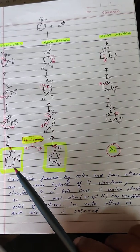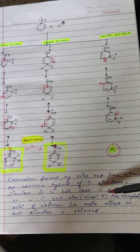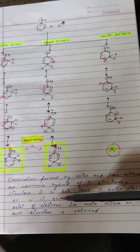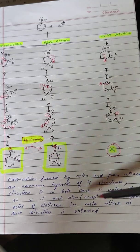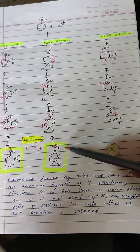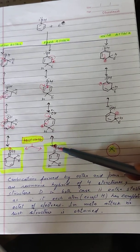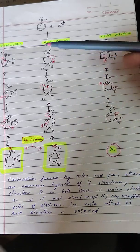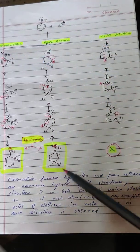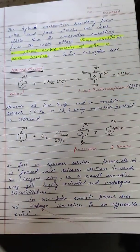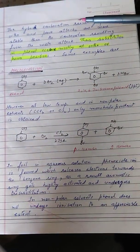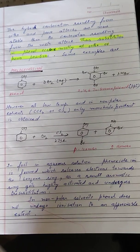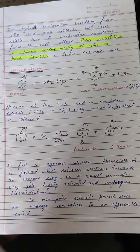Structure D, obtained in case of ortho and para attack, is extra stable because in this structure each and every atom — except hydrogen — has a complete octet of electrons. No such structure is obtained in case of meta attack. Therefore the hybrid carbocation from ortho and para attack is more stable, and substitution in phenol occurs mostly at ortho and para positions.